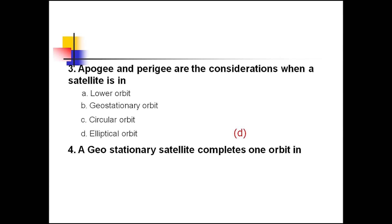Question 4: A geostationary satellite completes one orbit in — option A: one hour, option B: five hours, option C: 24 hours, option D: 28 days. The correct choice is 24 hours. The time period of revolution of a geostationary satellite is the same as that of the Earth, and therefore an observer on Earth sees the satellite as stationary. Hence, 24-hour communication is possible with geostationary satellites.